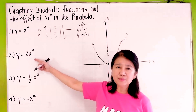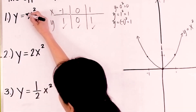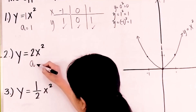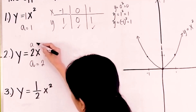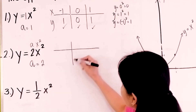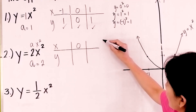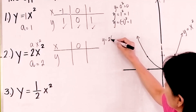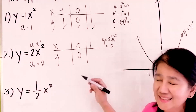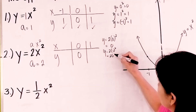Now let's proceed with number 2: y equals 2x squared. Observe that the value of A in number 1 is 1, while the value of A in number 2 is 2. This is A times x squared, so the value of A is 2. Let us draw a table again with x and y values. We let x be 0, so y equals 2 times 0 squared, which gives us 0. If we let x be 1, y equals 2 times 1 squared.